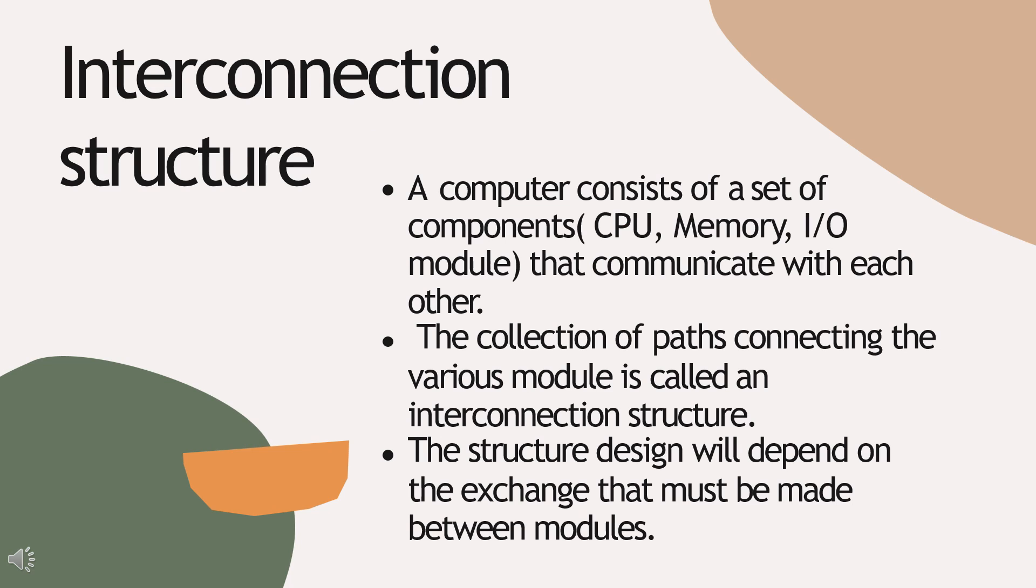Interconnection Structure: A computer consists of a set of components like CPU, memory, and input-output modules that communicate with each other. The collection of paths connecting the various modules is called an interconnection structure. The structure design will depend on the exchange that must be made between modules.